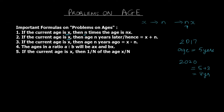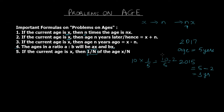Point 3: if the current age is x years, then the age n years ago is x minus n — just the opposite of point 2. So if age is 5 years in 2017, the age in 2015 would be 5 minus 2, which is 3 years. Point 4: ages in a ratio a to b will always be ax and bx, where x is a common multiplying factor and cancels to preserve the ratio. Point 5: if the current age is x, then one-nth of the age is x divided by n — again a multiplying factor. These five points are pretty common sense.